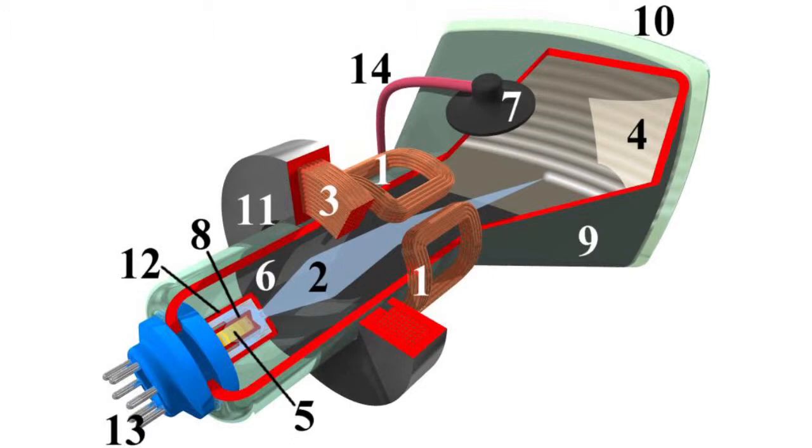A kinescope or cathode ray tube (CRT) is an electric vacuum device that converts electrical signals into light signals. The basics of CRT operations were developed by German physicist Karl Braun in 1895.